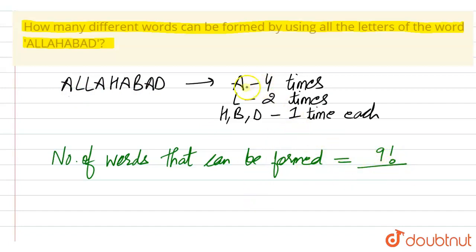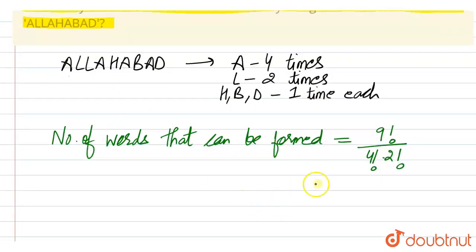We will divide by A is four times, so this is four factorial in the denominator, and L is also two times, so two factorial. This becomes nine into eight into seven into six into five into four factorial.